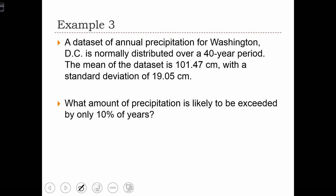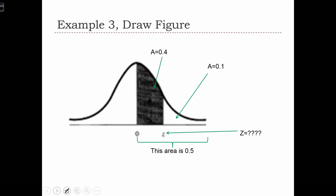What precipitation level is exceeded by only 10% of the years? In other words, to draw this out, we want to know what level of precipitation—that's going to be a z-score.